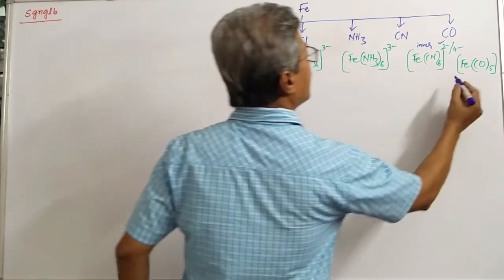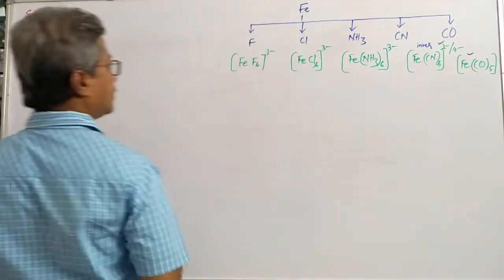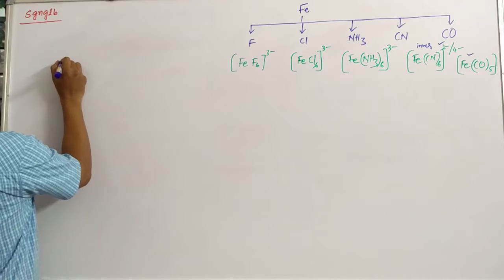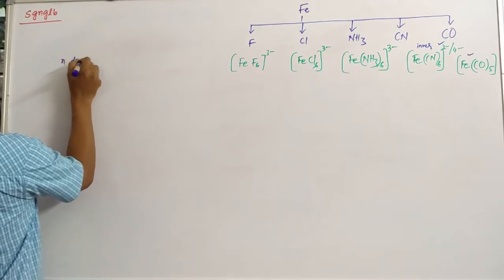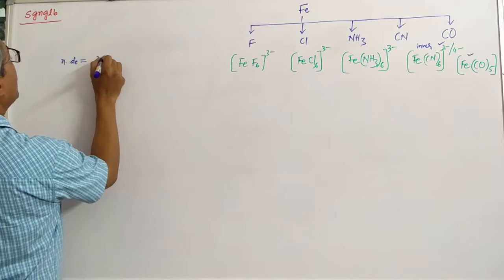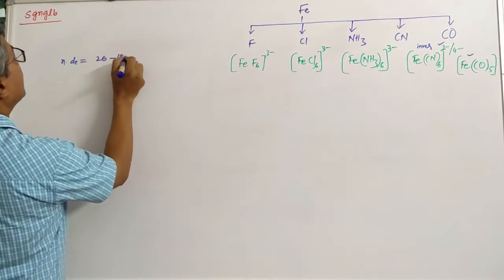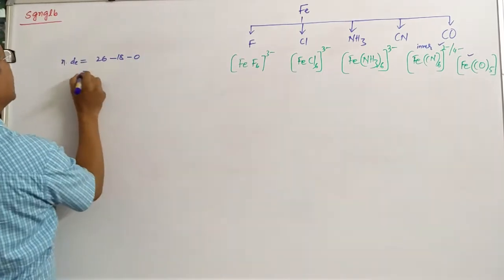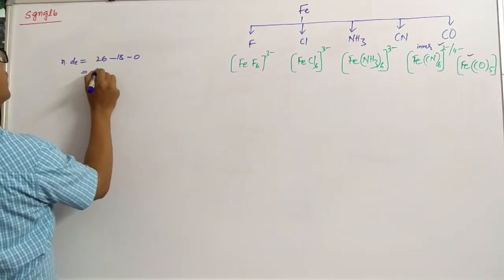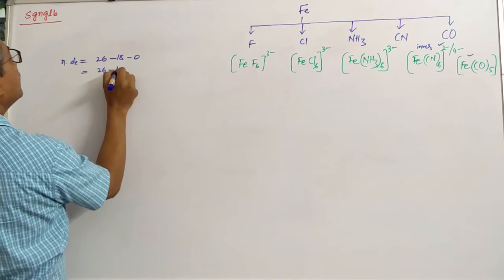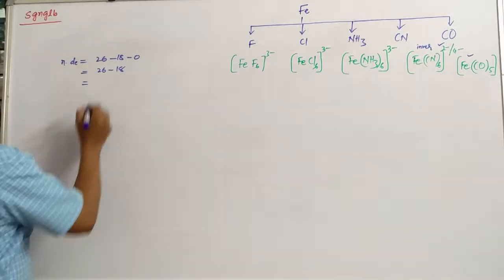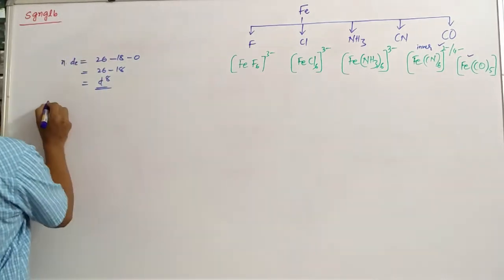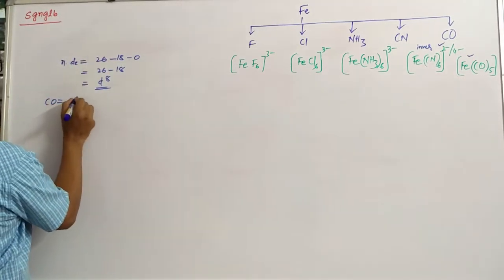Now let us take Fe(CO)₅ as an example. The D electrons = atomic number of Fe (26) − 18, and the charge is 0. So it is D8. CO is a strong ligand, which means force pairing occurs.